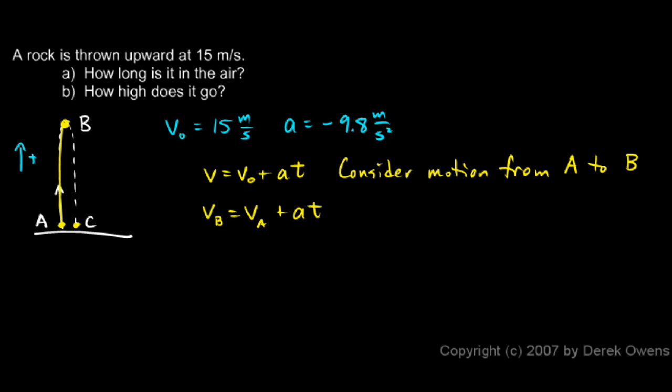Before I put numbers in, I like to do the algebra first. And you solve this algebraically for t and you get t is equal to VB minus VA over a. And then once I have, I'm trying to find the time, that's my question for part A, how long is it in the air. Once I do the algebra to solve for t, then I put the numbers in.